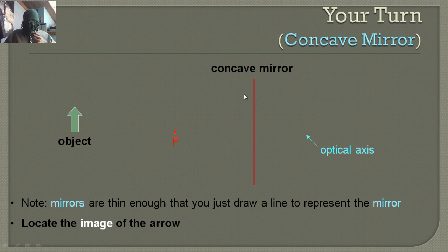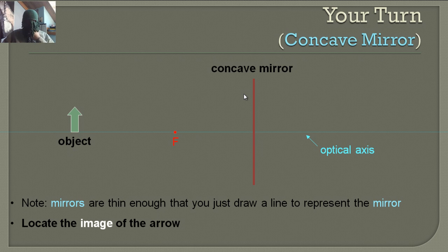Now it's your turn — draw where the object would be in this case. You probably want to pause and draw it before you continue on. Or you could just have me do it for you — hit pause.